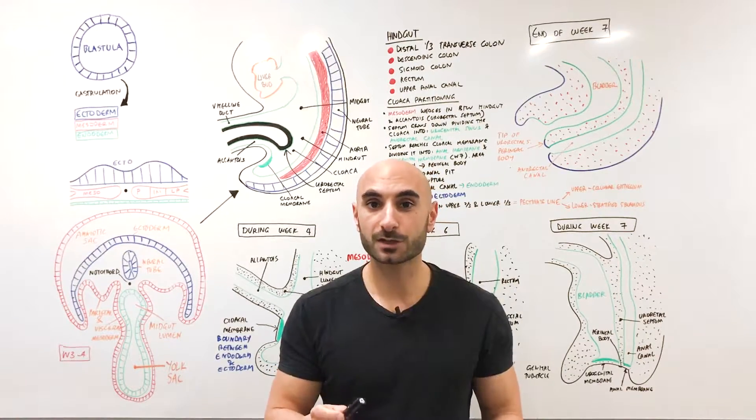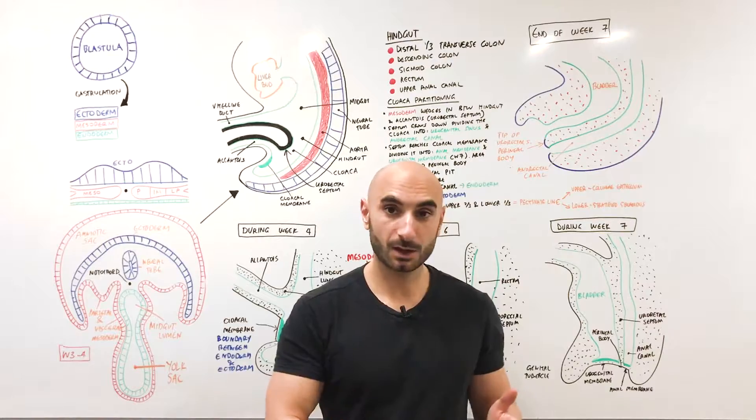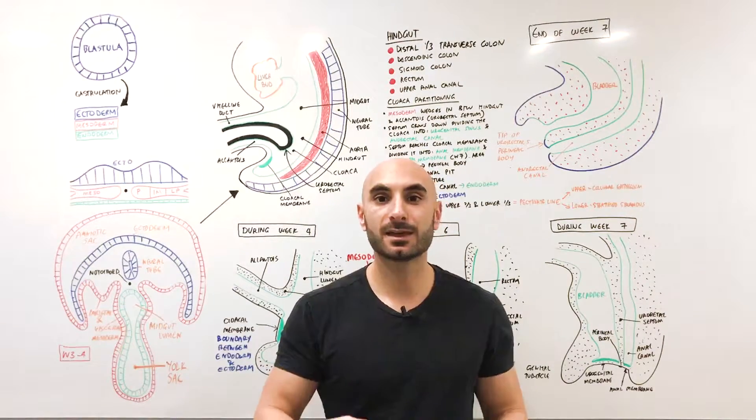That's the distal third of the transverse colon, the descending colon, the sigmoid, the rectum, and the anal canal.